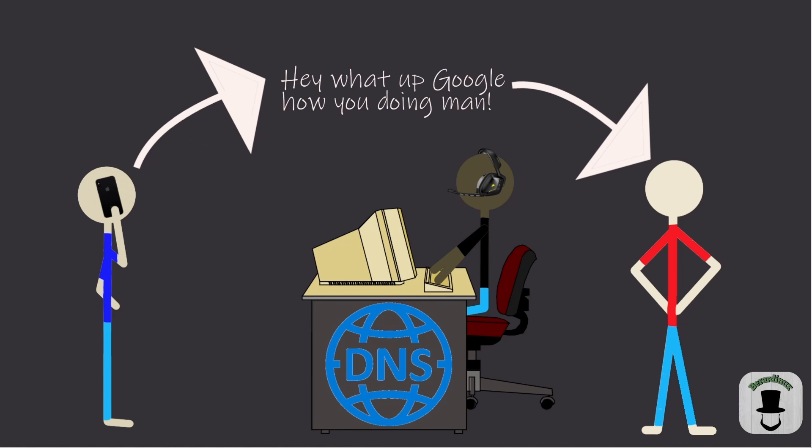There are other things like cache and stuff like that — you're going to have stored on your system for stuff that you have looked up more frequently. It is going to keep a cache. But in general, whenever you're going to try to find an IP address that your PC doesn't recognize, it's going to ask your domain name service. And that's pretty much what we're going to be going over today: how to change that inside of Linux.